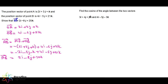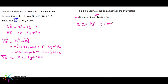Now find the cosine of the angle between the two vectors. Let's call them vector u and vector v. The formula is: u · v = |u| × |v| × cos θ — the same formula we use.